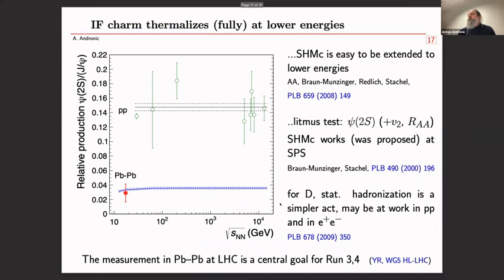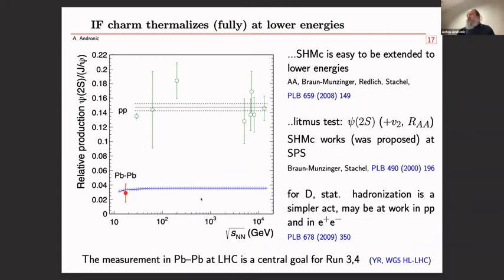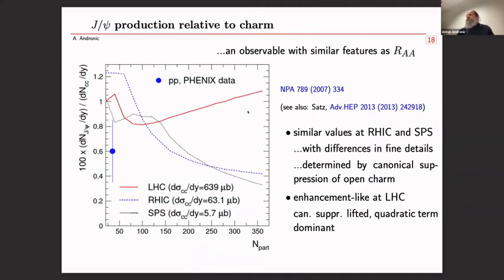If charm thermalizes also at lower energies — as suggested by the Psi(2S)/J/psi ratio measurement at the SPS (the red point here) — the model is applicable at lower energies with the same assumptions. We have applied it at RHIC (blue line), LHC (red), and SPS (black), showing the J/psi yield normalized to the cc-bar input cross section. One can see the different regimes, and at LHC it will be very interesting to measure the Psi(2S)/J/psi ratio, which in lead-lead is clearly smaller than in pp.